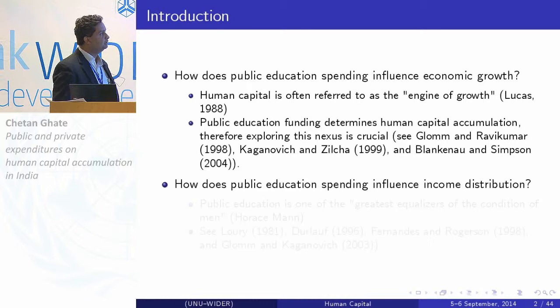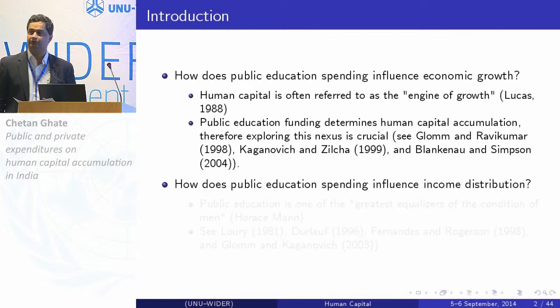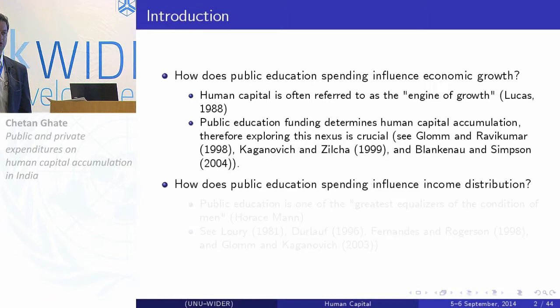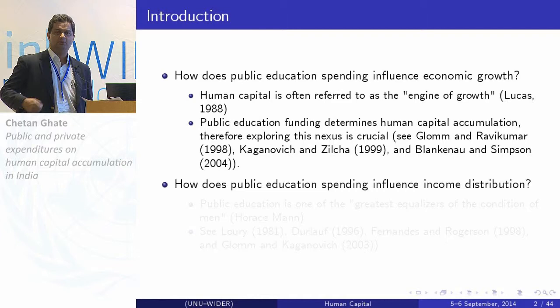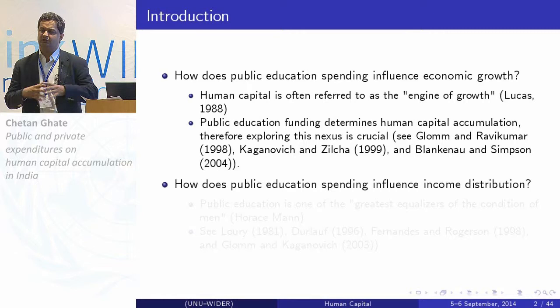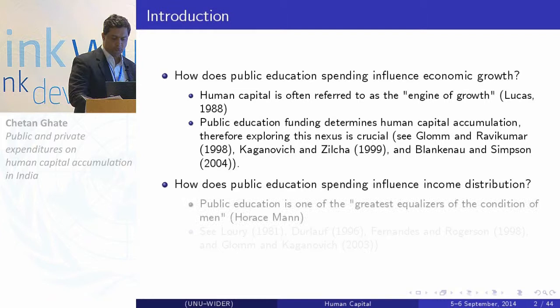To make these models tractable, simplifying assumptions are often used. For instance, Lucas only considers a private input in human capital accumulation. If you have composite inputs and model human capital accumulation as Cobb-Douglas, you get unitary elasticity of substitution. If you have both public and private spending, these models end up being difficult to solve unless you assume rho equals one. So simplifying assumptions are made to characterize the balanced growth path.